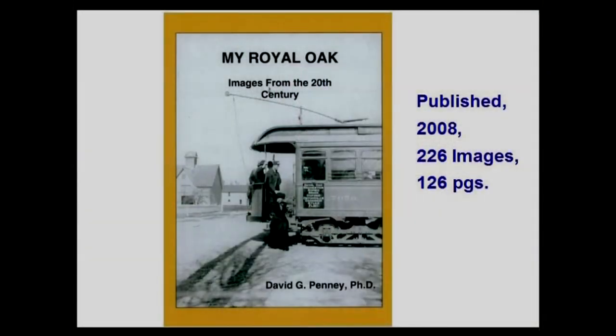My Royal Oak is the newest publication. It is primarily a picture book and you can get it at Francis Hardware or the museum for $25 — all proceeds go to the museum. It was published in 2008 and contains about 226 images, most of which are historic or archival. The earliest go back to around 1890, and there are some from 2007 and 2008 showing the way things look now compared to many years ago.